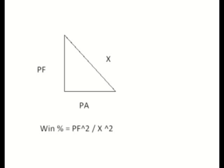Anyone who's done much sports betting knows about something called the Pythagorean Theorem, which is a way to predict how many games a team will win in a sport based on how many points they scored and how many points they allowed. Here's the Crash Course Summary. If you draw a right angle triangle, put points for on one side, points against on the other, you can calculate the distance of the hypotenuse. The odds of a team winning an individual game during a season is then points for squared divided by x squared.